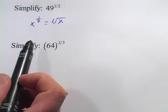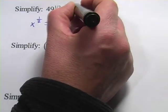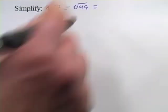So in this first problem, we have 49 to the 1/2 power. That's the same thing as the square root of 49, and that's just 7.